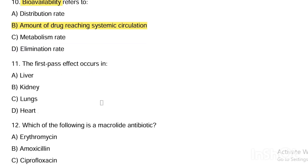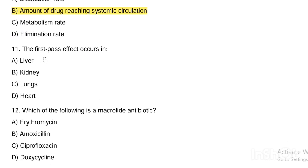Next question. First pass effect occurs in: Option A, liver. Option B, kidney. Option C, lungs. Option D, heart. Answer — first pass effect occurs in the liver.